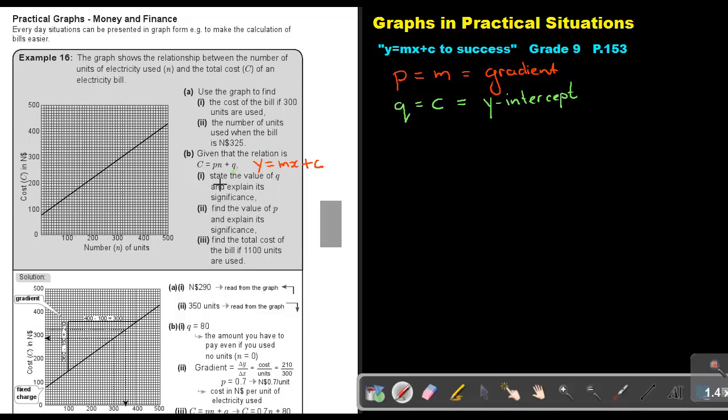So let's just go to the question. State the value of Q and explain its significance. Now the value of Q is the Y-intercept. Now if you look here, the Y-intercept is there. So basically, if I must read it down, let's just count. So it will be 10, 20, 30, 40, 50, 60, 70, 80. It looks like it's on the dot 80. Now what does it mean? It means the amount you have to pay even if you use no units. So it's the basic fee. So it's just for having the service you are paying that $80 even if you did not use any unit.